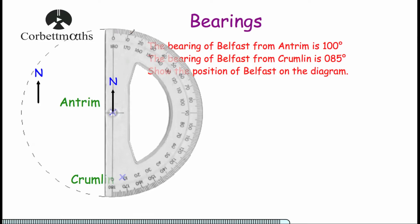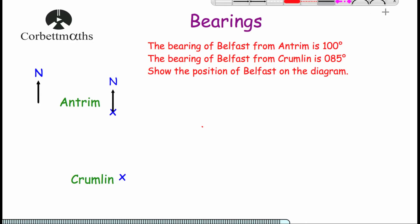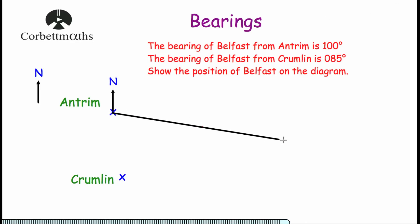Starting at 0 and going clockwise: 10, 20, 30, 40, 50, 60, 70, 80, 90 — so that's east — and then 100 degrees is right there. So we know that Belfast is in this direction from Antrim. Let's get our ruler and pencil and draw a nice straight line from Antrim through that point. We know Belfast is somewhere on that line.